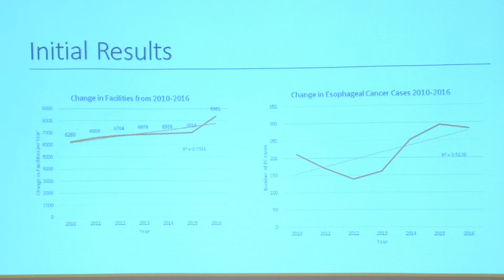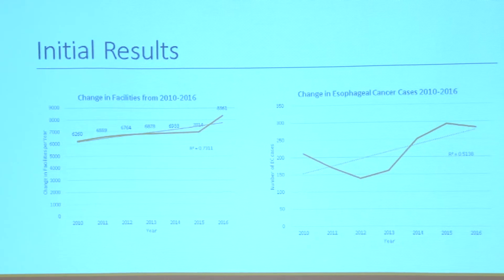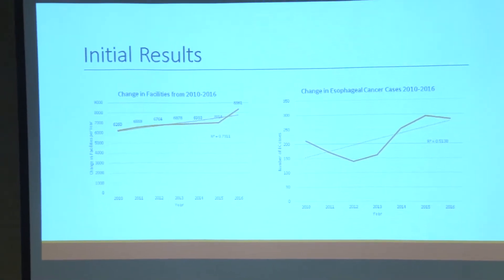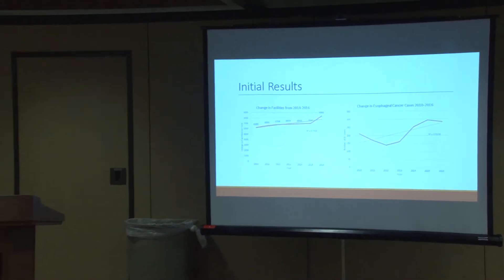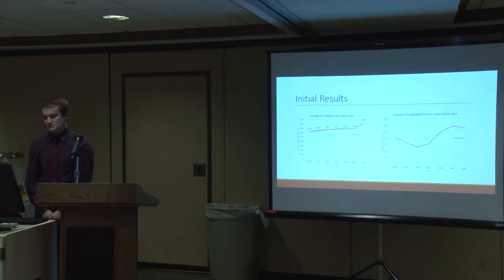These are initial results from changes in health facilities. I got data from the Ministry of Health classifying hospitals from dispensaries to regional health centers to hospitals, and I was interested in whether dispensaries — the lowest level of healthcare — most impacted the increase in esophageal cancer. There has been a pretty big increase in medical facilities from 2010 to 2016, and the second graph shows the change in raw esophageal cancer cases over the same period.